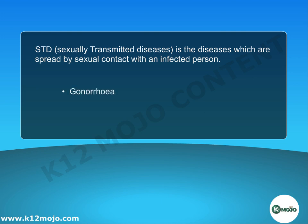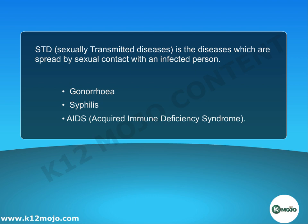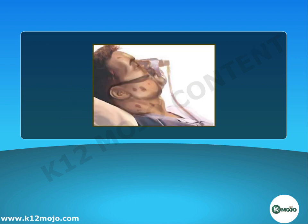Gonorrhea, syphilis, and AIDS — acquired immunodeficiency syndrome — are such diseases. Gonorrhea and syphilis are caused by bacteria. AIDS is caused by HIV, human immunodeficiency virus, which damages the body's immune system, causing the body to become weak and unable to protect itself against minor infections.